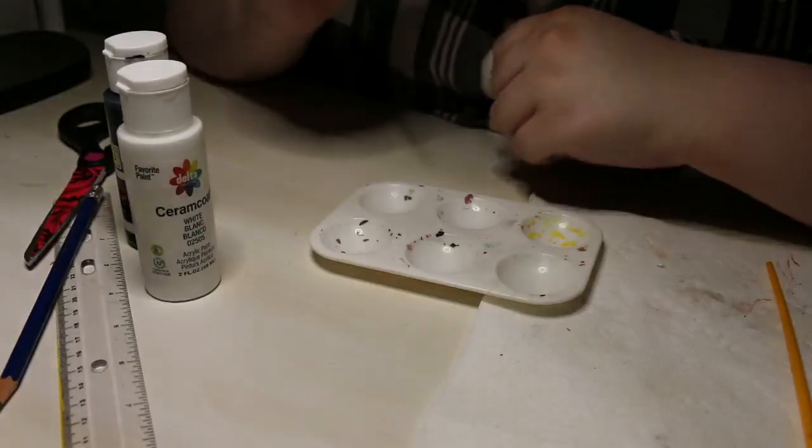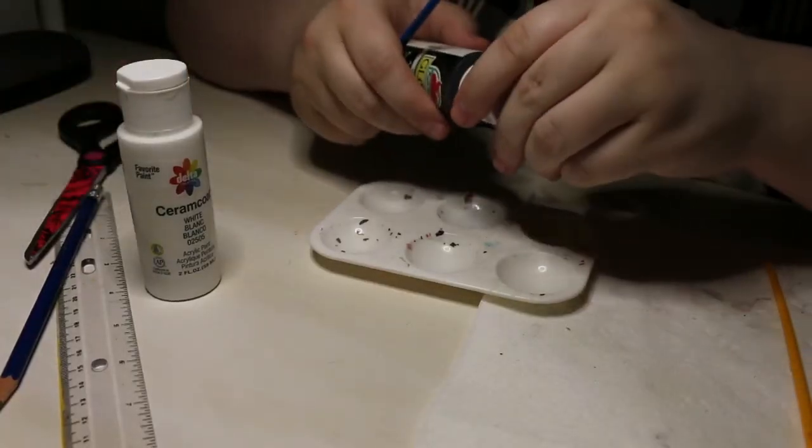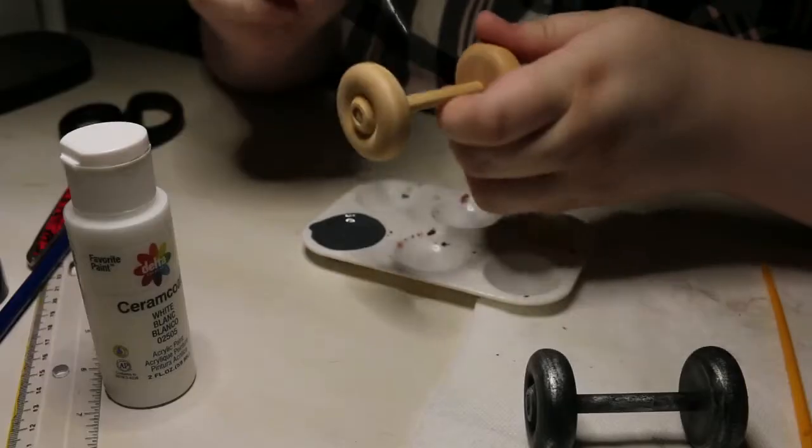Now once your wheel is drying, the glue is drying, we're going to make up our paint and just start painting it on.